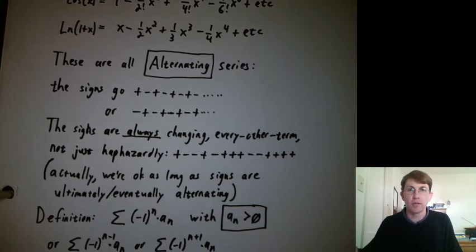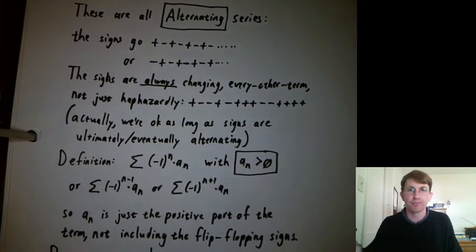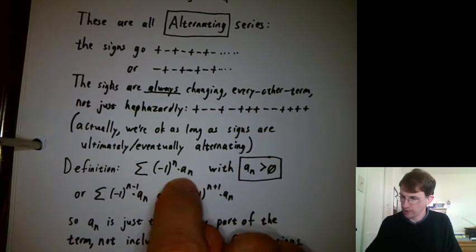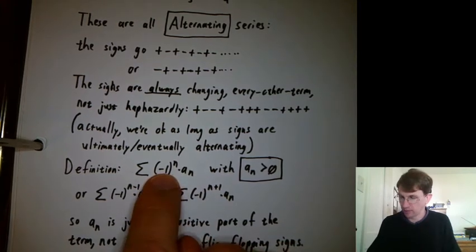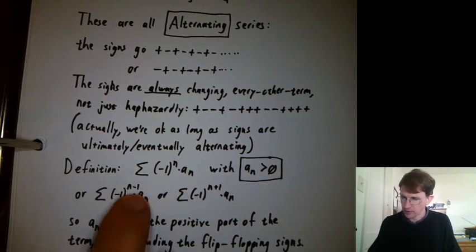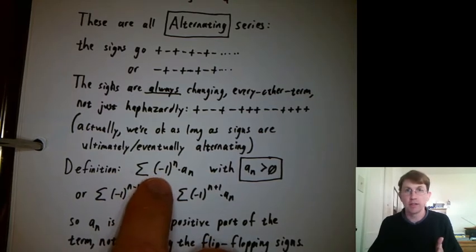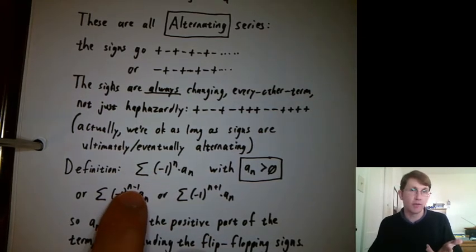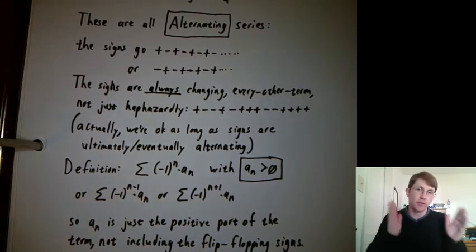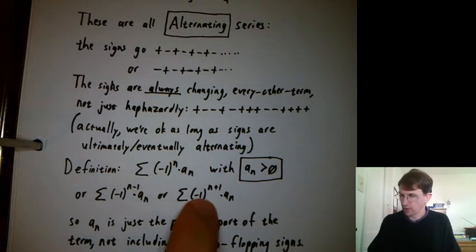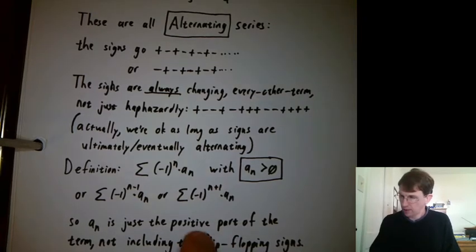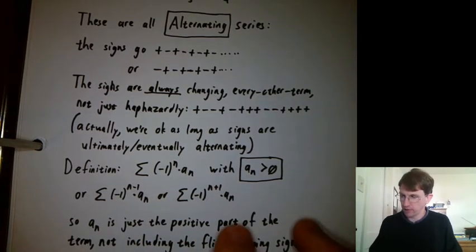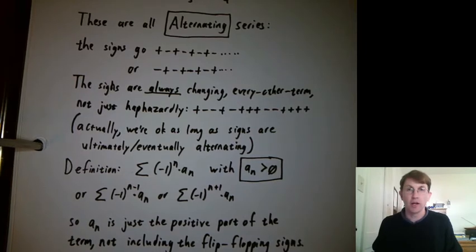Let's define some notation for them. So we're going to say the a sub n part is just the positive part without the flip-flopping signs part. And the flip-flopping signs part could be negative 1 to the n. It could be negative 1 to the n minus 1. If we want to shift all the pluses to be minuses and vice versa, or negative n plus 1, we'll be shifting all the pluses and minuses the other way.